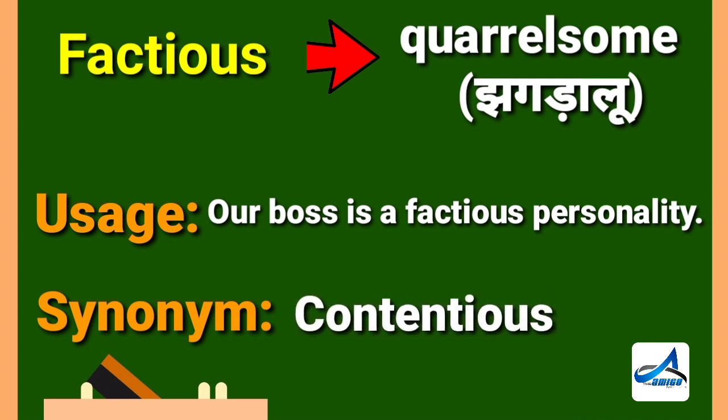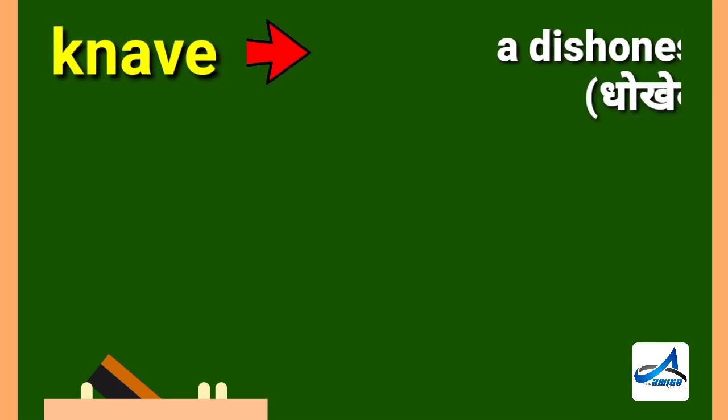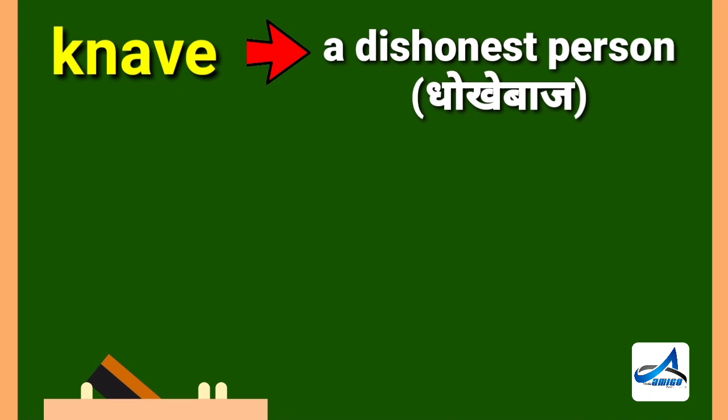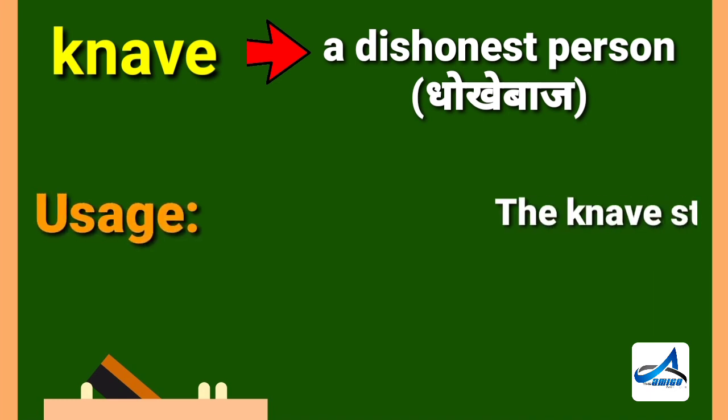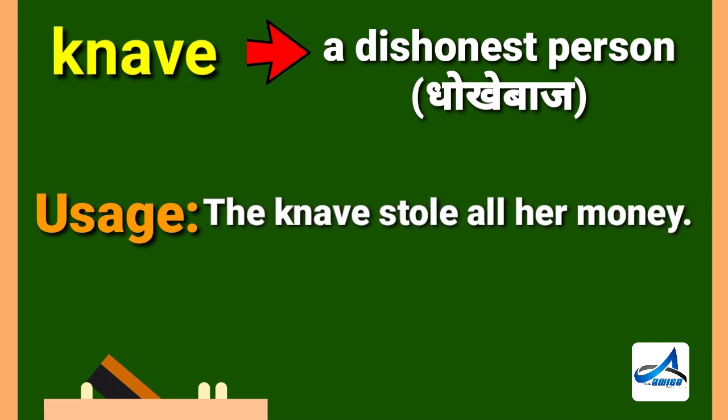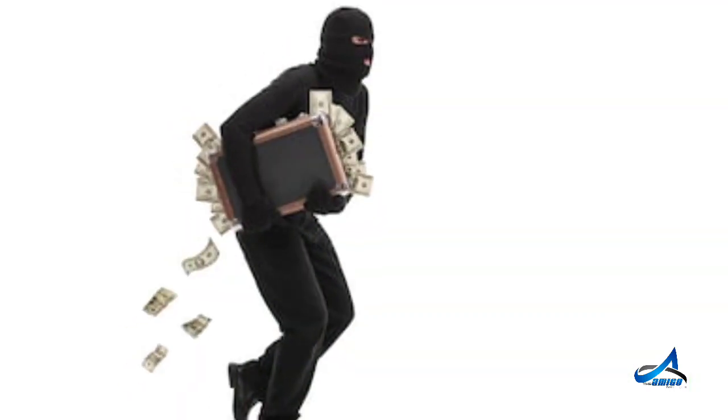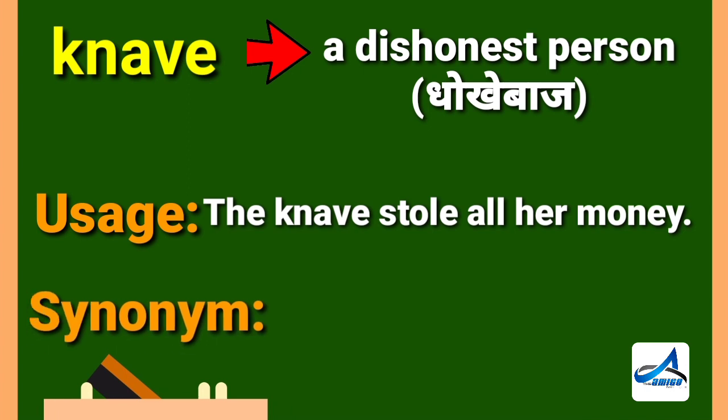Moving to our next word, which is knave. Friends, knave means a dishonest person. In Hindi, you can say dhuke baas. Now its sentence, the knave stole all her money. Its synonym is rogue.